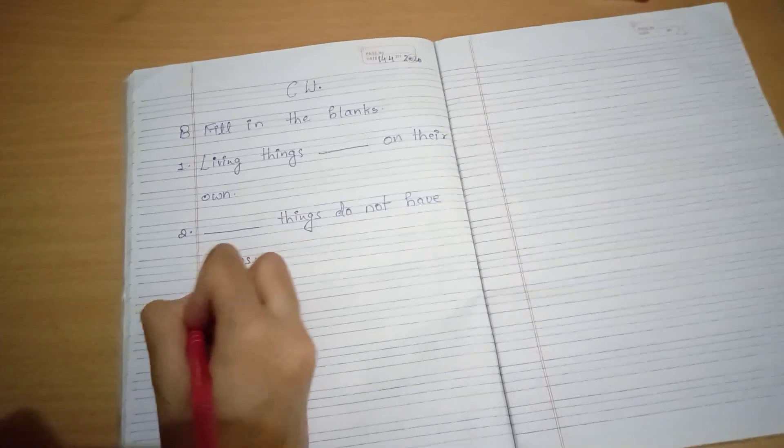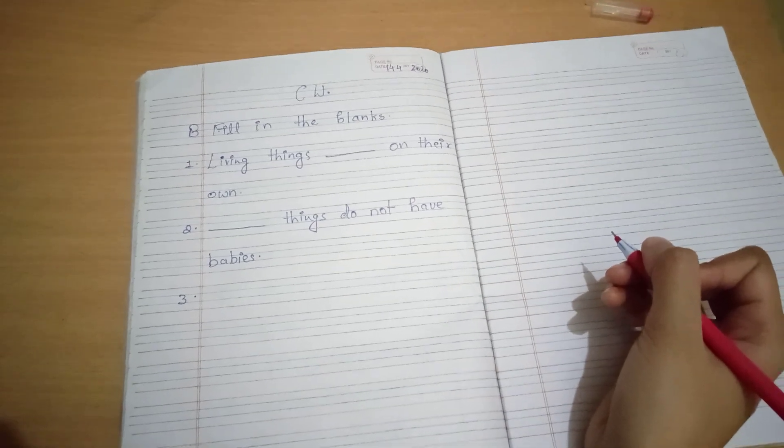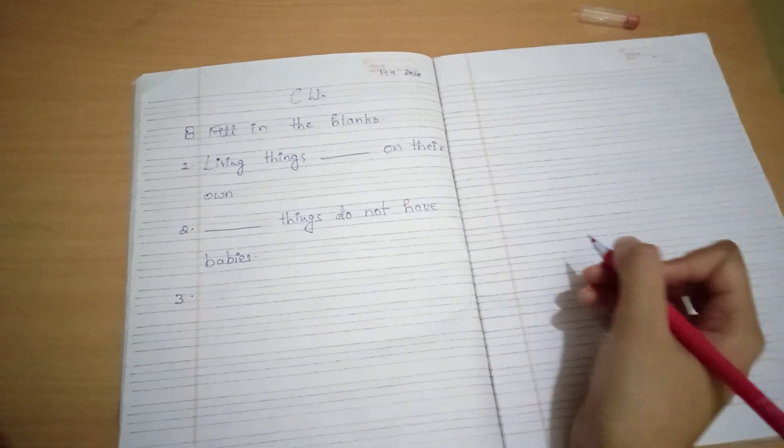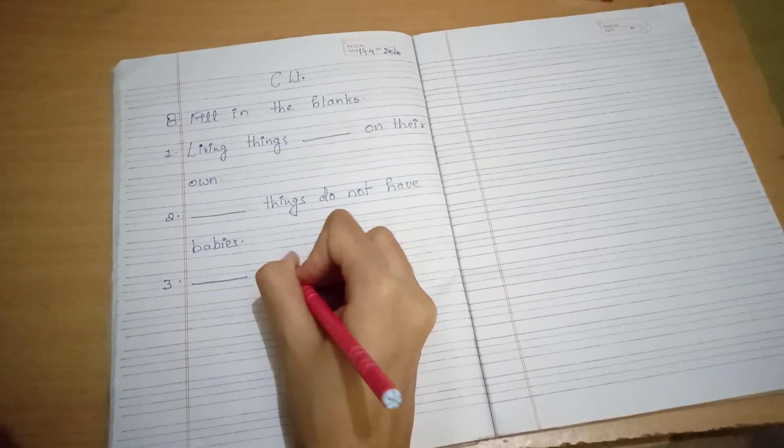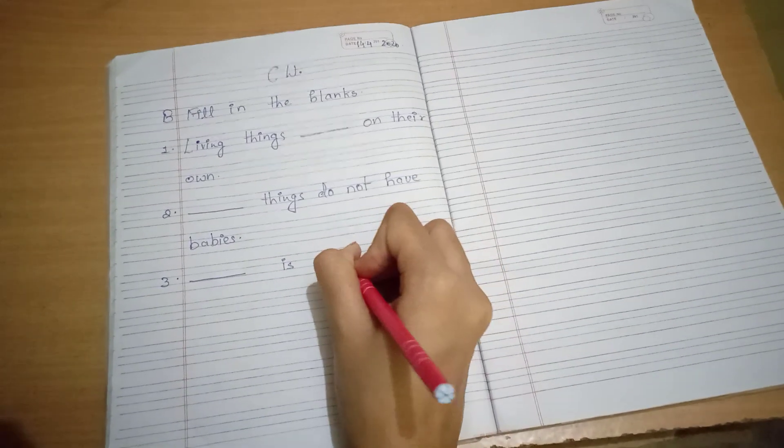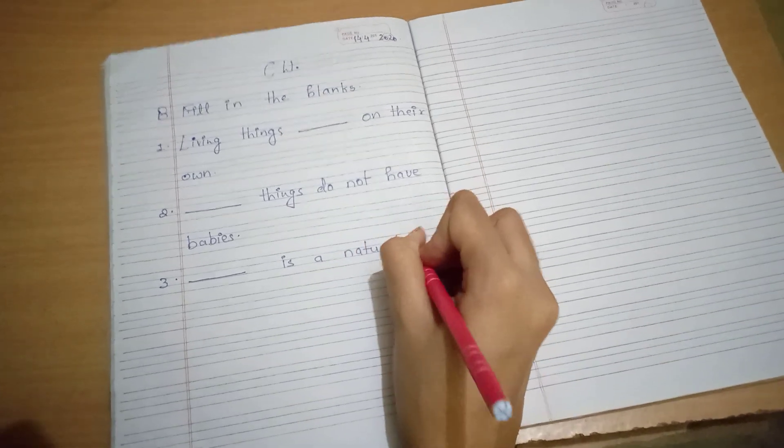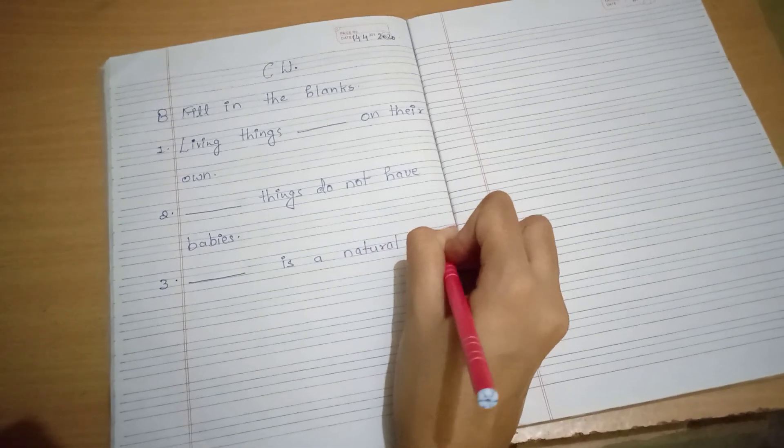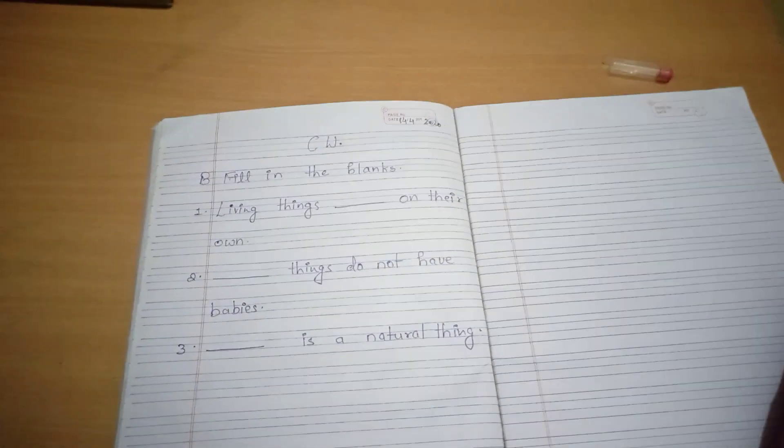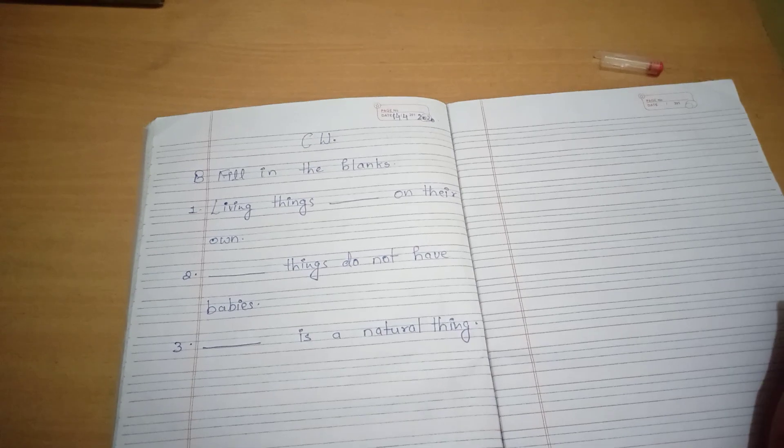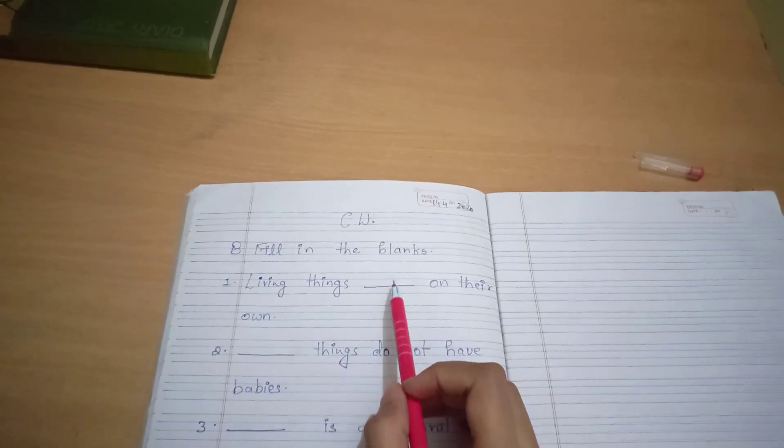Number three. Blank is a natural things. Okay, now let's understand this. Then write answer here.